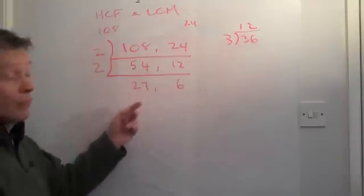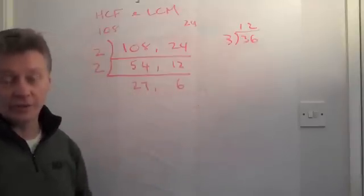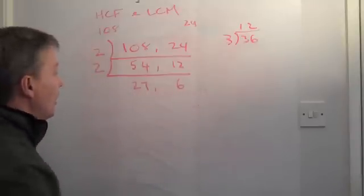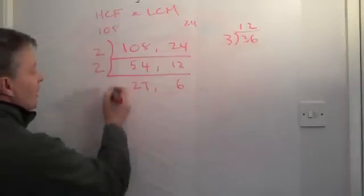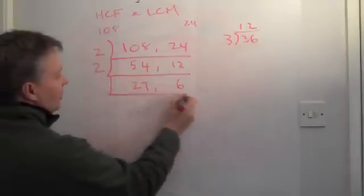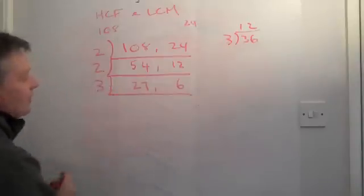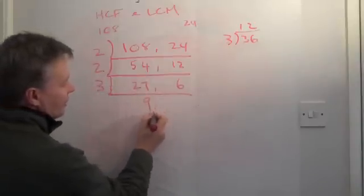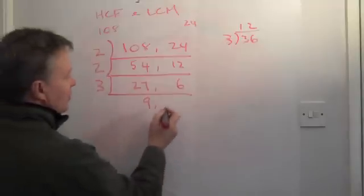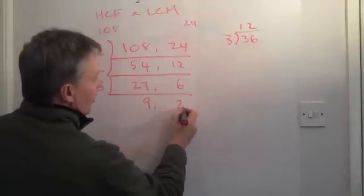Now, there still are numbers that will divide into 27 and 6. So, I know that 27 and 6 has a common factor of 3. So, 3 into 27 goes 9 times. 3 into 6 goes twice.